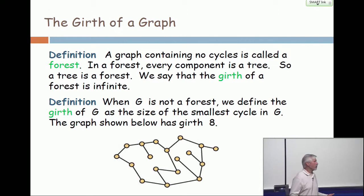But what do you do if there are no cycles? So if there are no cycles, like is the case in a tree, we just say that the girth is infinite. You can't get around in a finite length of time.